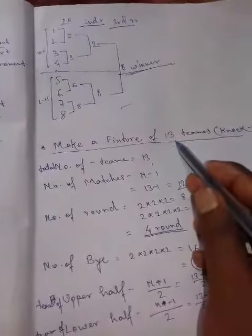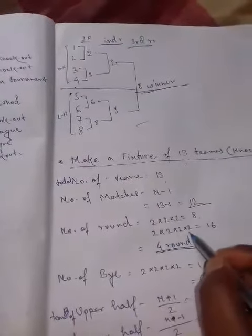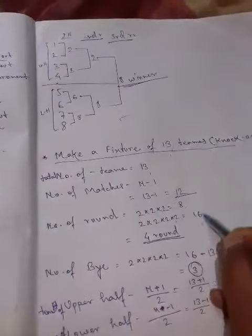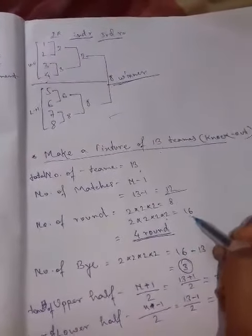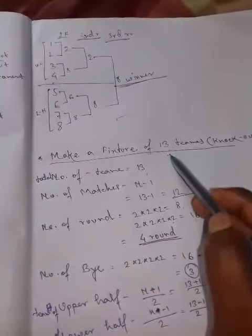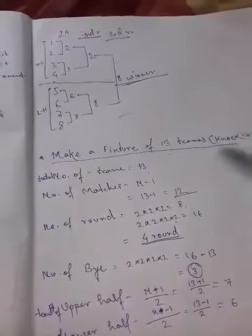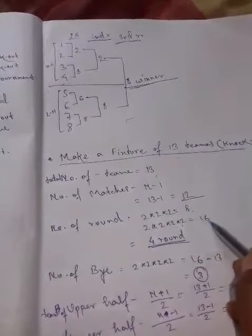हम लोग के पास total number of teams है 13। तो अगर और एक 2 बढ़ाया जाए तब 16 हो जा रहा है, वह भी 13 की equal नहीं हो रहा है। लेकिन हम लोगों को हमेशा power of 2 देखना होगा कि जितने सारे number of teams दिया गया है, उससे कम नहीं होना चाहिए।